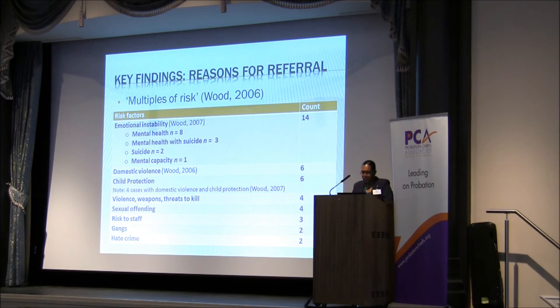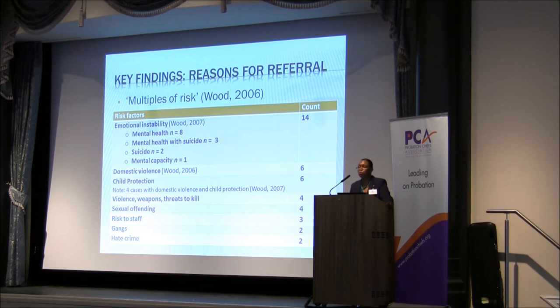Looking at the key findings and the reasons for referral: in keeping with Joanne Wood's work, what it showed was that there were multiples of risk — it was definitely more complex than just one particular thing. In the majority of cases — 13 of those cases — there were actually two or more risk factors that could be identified within the referral paperwork as the reason the referral was made.